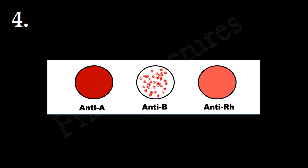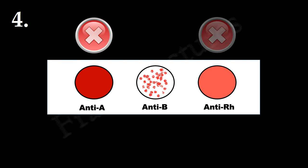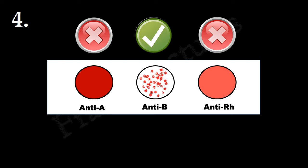Here, antigen A and RH antigen are absent since there is no agglutination in the anti-A and anti-RH circles. Agglutination in the anti-B circle indicates the presence of B antigen. So blood group is B negative.